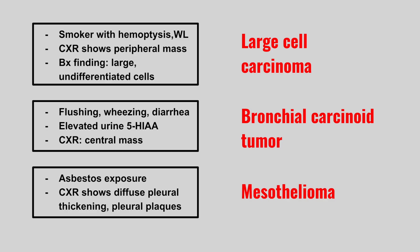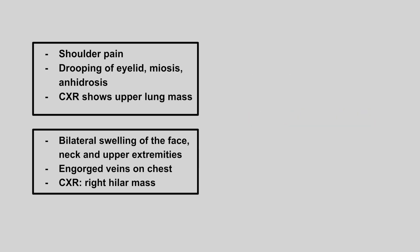Now we have a patient with an upper lung mass. This is a Pancoast tumor. Remember, this upper lung mass compresses against the nerves, giving you Horner syndrome with the drooping eyelids, miosis, and anhidrosis.